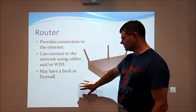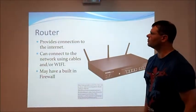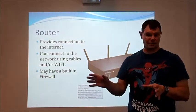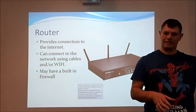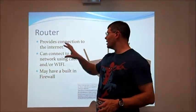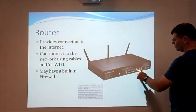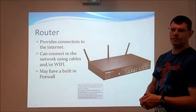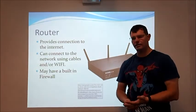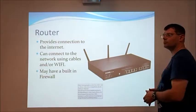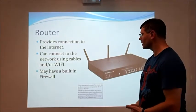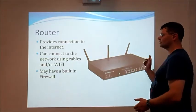Next is the router. A router is what provides connection to the internet — it connects your network to the internet. It doesn't necessarily do anything else; it won't necessarily share that information with anybody until it's plugged into a network, but it actually connects to the internet and provides your internet connection. You can connect using either cables — this one has got Ethernet ports in the back of it so you can plug directly in — and it's also got wireless antennas so you can connect via Wi-Fi. Some of these might have a firewall built into them as well. A firewall is something that stops people getting onto your network if they don't have authorized access, so it keeps hackers out.